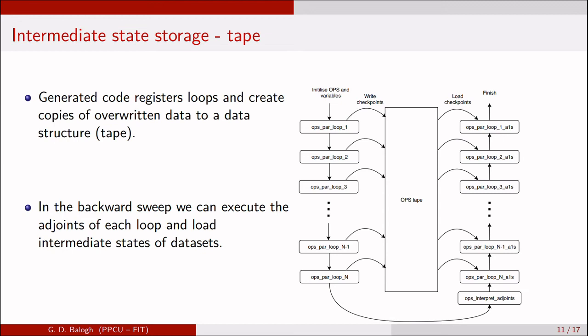For the intermediate state storage, we introduced a so-called tape data structure where each loop will save a copy of the overwritten data into the tape. At the final stage of the primal code, we call the OPS interpreted adjoints function, and inside that function we can reverse the chain and load the intermediate states for each loop that we require from the tape.